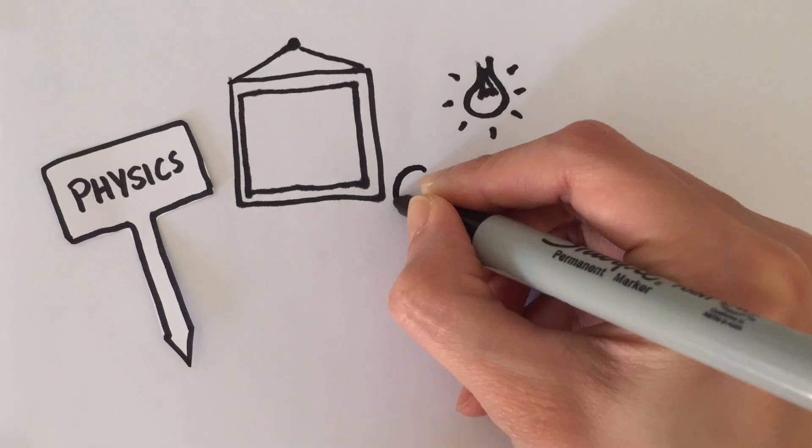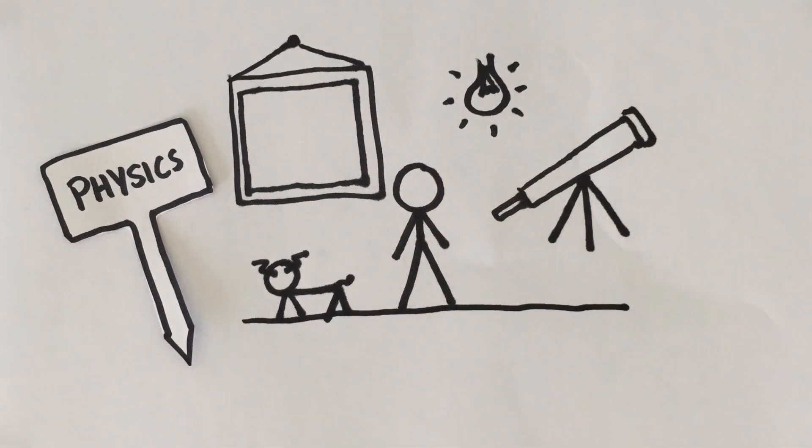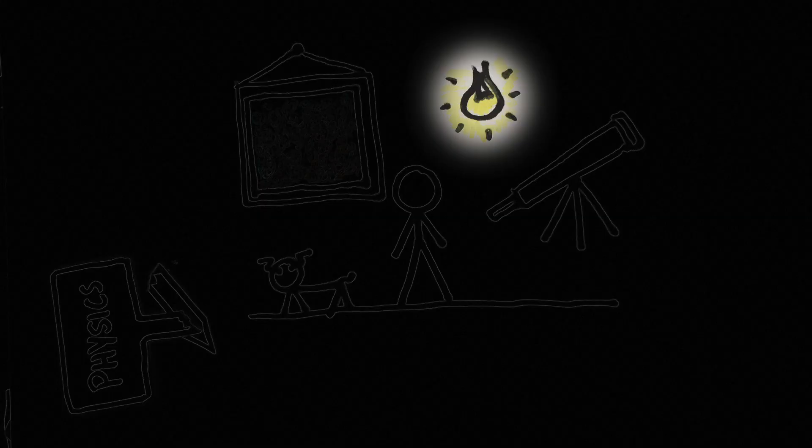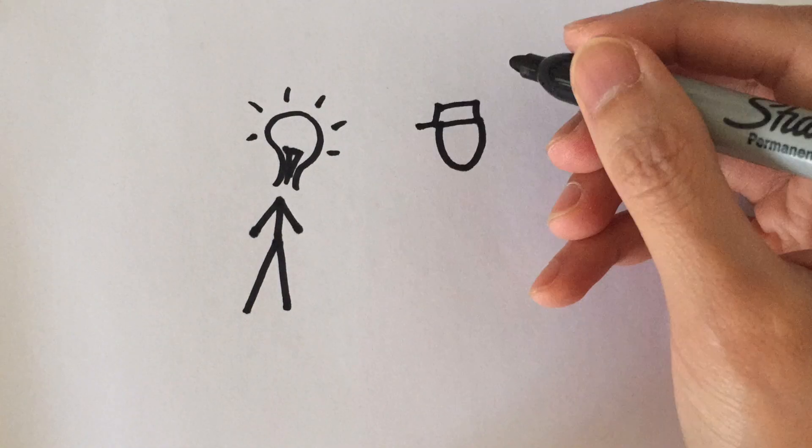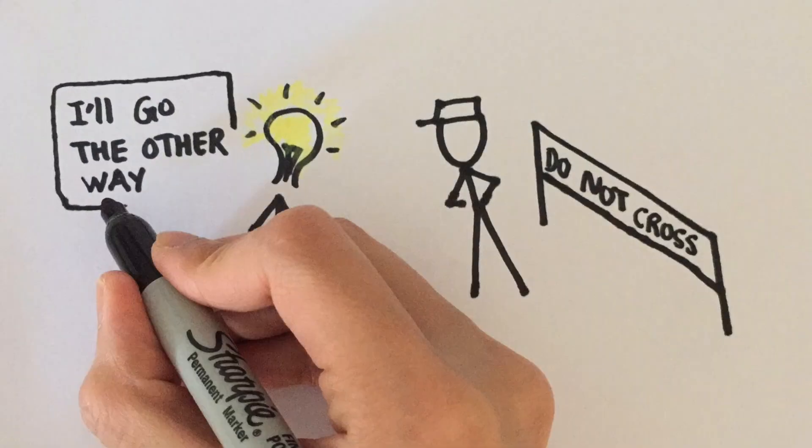If the physics of reflection does not exist in the world, we wouldn't be able to see a single thing even if there is light. When a light wave meets a boundary, it changes direction, which we call reflection.